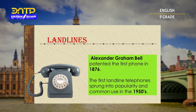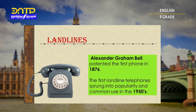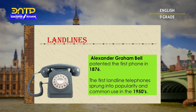Later, electrical telegraph networks permitted people and commerce to almost instantly transmit messages across both continents and oceans. The second modern means of communication is landlines, invented by Alexander Graham Bell in 1876. The first landline telephones sprang into popularity and common use in the 1950s. The telephone is a telecommunication device that transmits and receives sounds, usually the human voice, allowing two people separated by large distances to talk to each other. Landlines have long been considered indispensable to businesses, households, and are one of the most common appliances in the developed world.